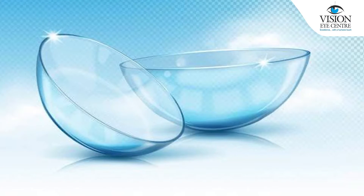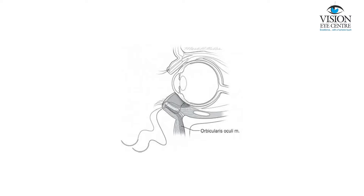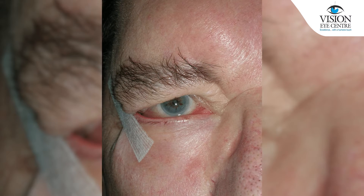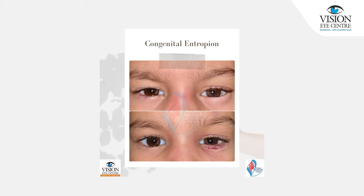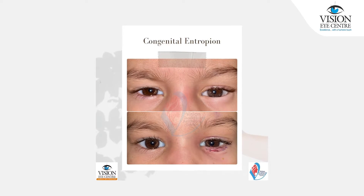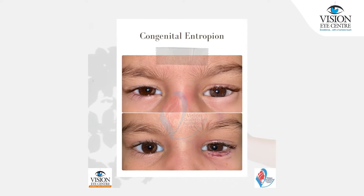This can be corrected temporarily by a bandage contact lens for the irritation, or with temporary everting sutures, or simply a tape applied to the lower lid. However, these are not permanent solutions. It requires a surgery wherein a cut is made under the eyelid and this area is repaired.